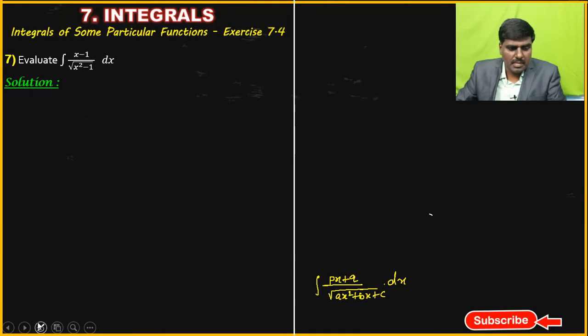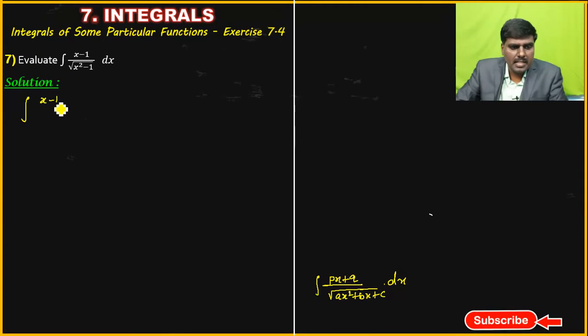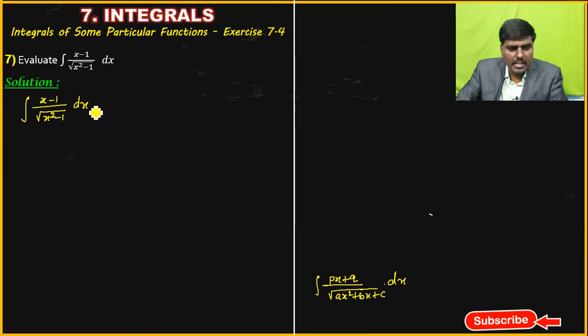What is the given question? Integration of X minus 1 divided by root of X squared minus 1 into dx. That is the question.